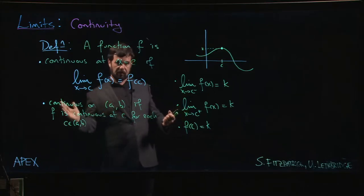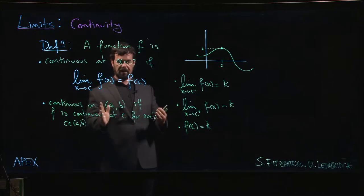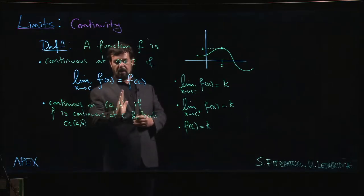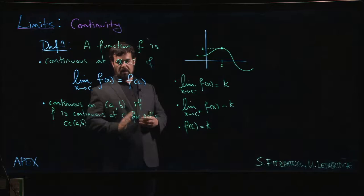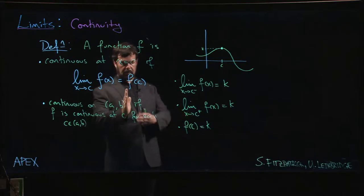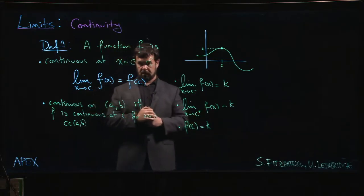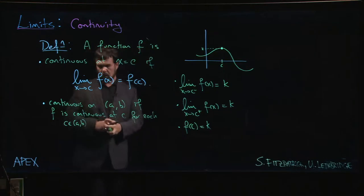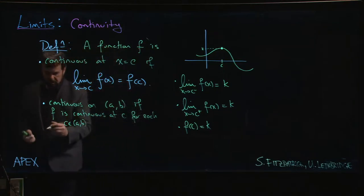We might be dealing with a function whose domain is a closed interval, and then we might not be able to talk about the limit at the left endpoint because the function might not be defined for x less than a, in which case it's only possible to look at a right-hand limit. Similarly at the right endpoint, it might be that we can only look at the left-hand limit because the function might not be defined to the right of b.